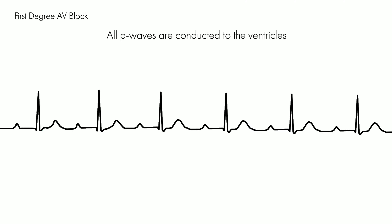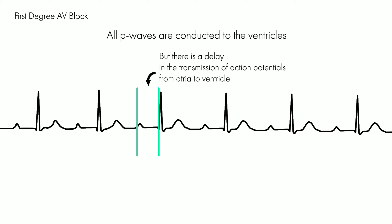In first degree AV block, all P waves are conducted to the ventricles, but there is a delay in the transmission of action potentials from atria to ventricle, resulting in a prolonged PR interval.